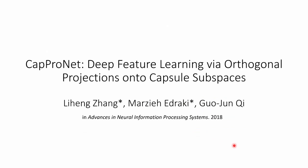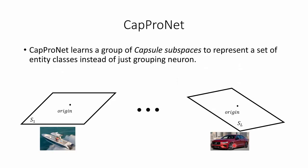Now we can introduce CapProNet, which uses the idea of subspace capsules in supervised image classification. This is a joint work with my colleague Li Heng and Dr. Gujunqi. In CapProNet, we learn a group of capsule subspaces to represent a set of entity classes instead of just grouping neurons. Consider a classification problem with L classes. In CapProNet, we learn L different capsule subspaces and model the variation in properties of each class in one capsule subspace — one subspace for each class, all the way through to the last class.